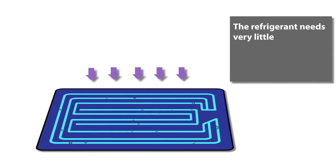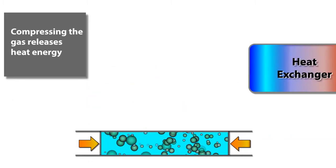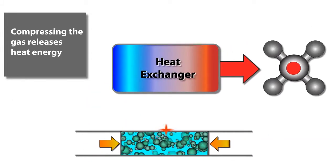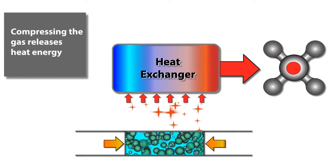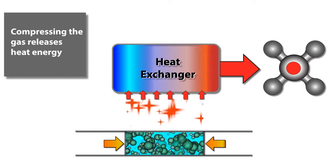The refrigerant needs only the tiniest rise in temperature to turn it into gas. This gas is then compressed. Compressing the gas releases heat energy which is used to heat your water. In this way, the panel can capture the heat existing in the environment and transmit it to your water.